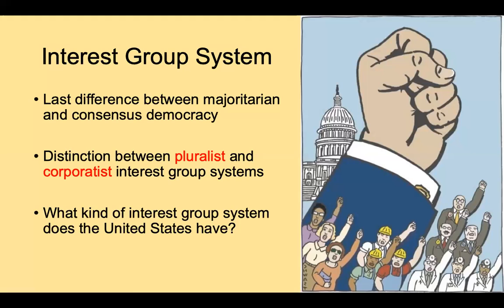Lijphart tells us that these institutional differences add up to a sizable distinction between majoritarian and consensus democracy. And there is one more distinction that becomes important: the distinction between the pluralist and corporatist types of interest group systems. Before we continue, let's get some more student input. What kind of interest group system does the United States have?